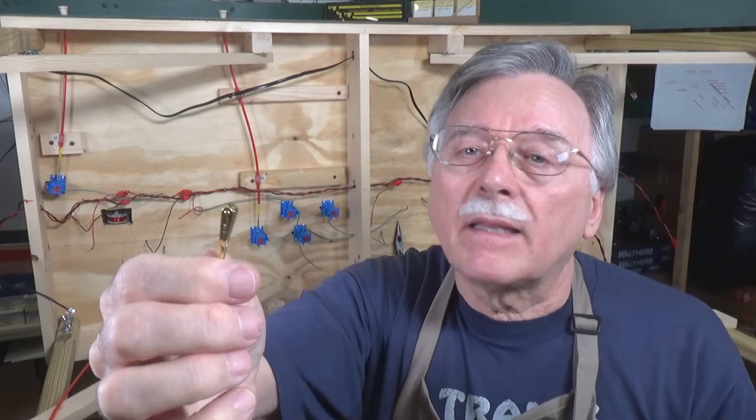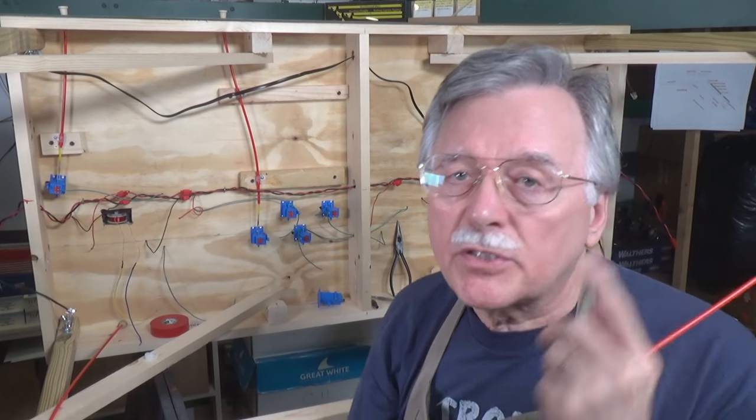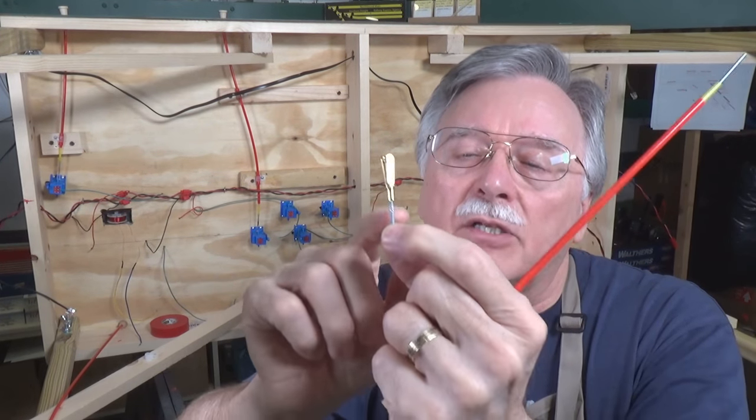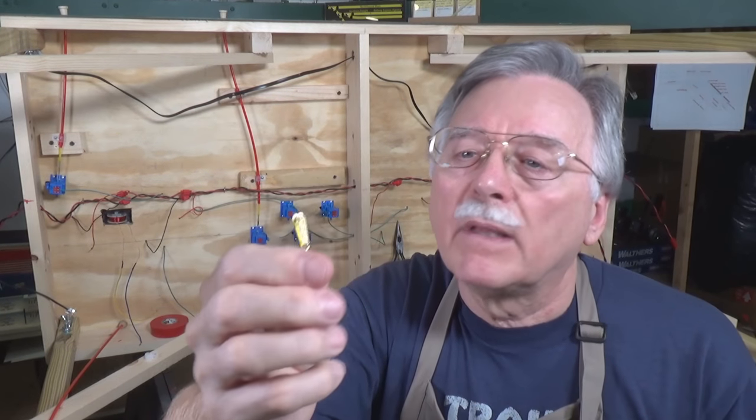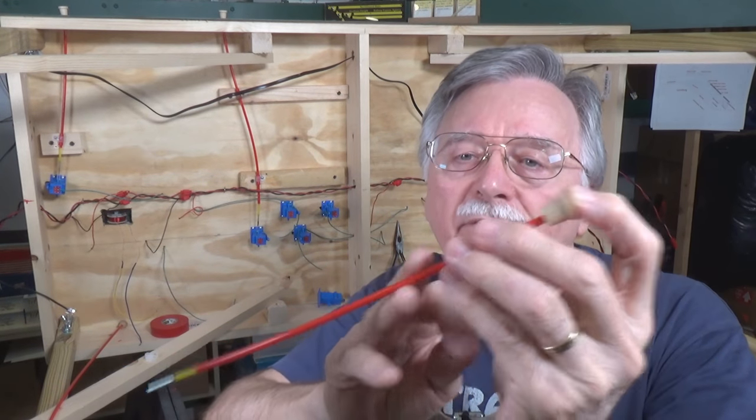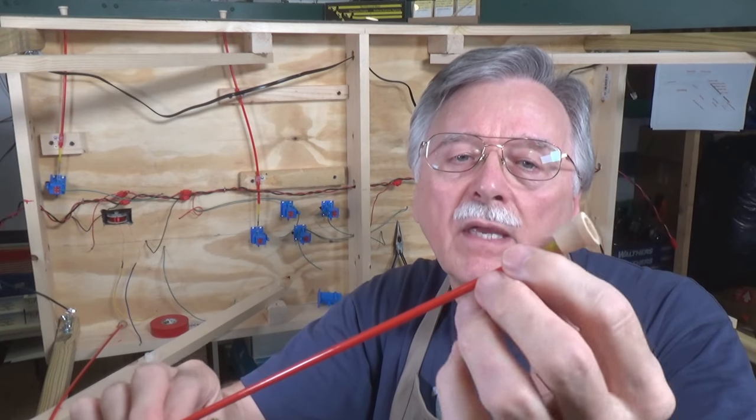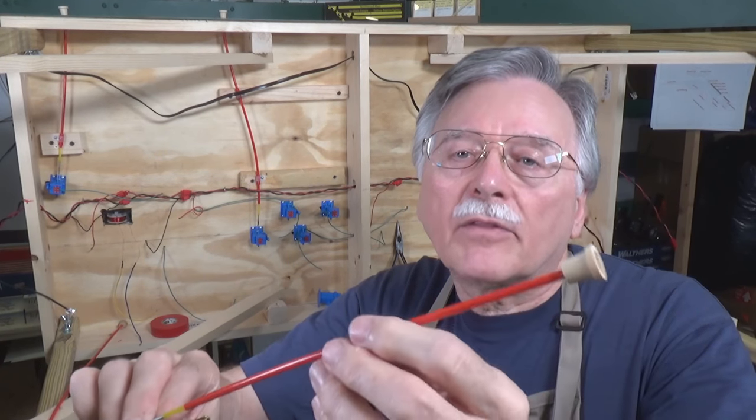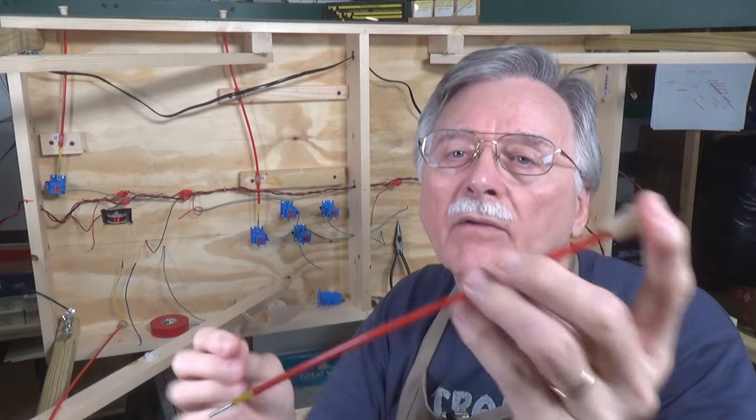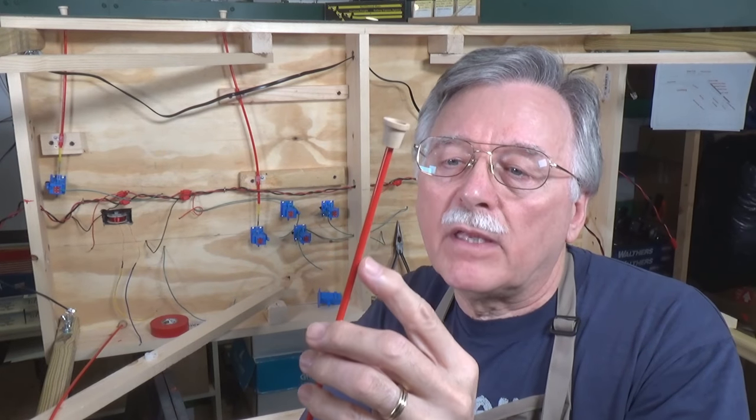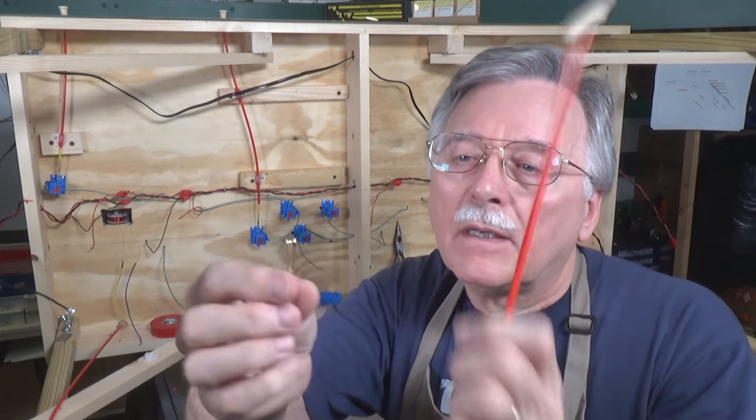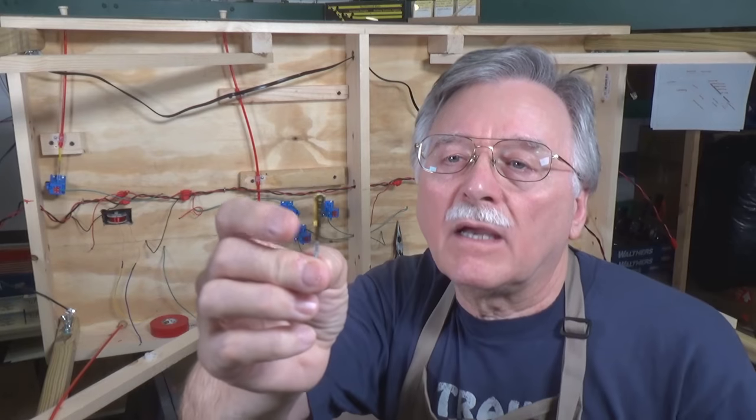Basically, for this entire module, I purchased two packages of the push buttons. I got one package of the clevises and one package of the threaded steel rod. That's all it took for this entire layout. And of course, one package of the flexible pushrod, which is five sets of the yellow and the red that are three feet long. And I'm able to do all nine of the turnouts here on the layout using one package of the flexible pushrod, two packages of the push buttons and one package each of the threaded rod and the clevises.